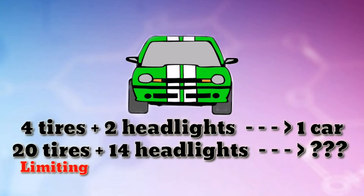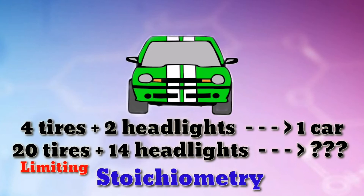The limiting reagent is the reactant that is completely used up in a reaction, and thus determines when the reaction stops. From the reaction stoichiometry, the exact amount of reactant needed to react with another element can be calculated. If the reactants are not mixed in the correct stoichiometric proportions as indicated by the balanced chemical equation, then one of the reactants will be entirely consumed while another will be left over. The limiting reagent is the one that is totally consumed — it limits the reaction from continuing because there is none left to react with the excess reactant. The following example demonstrates how to determine which reactant is limiting, which is in excess, and the amount of product formed when a limiting reagent is present.